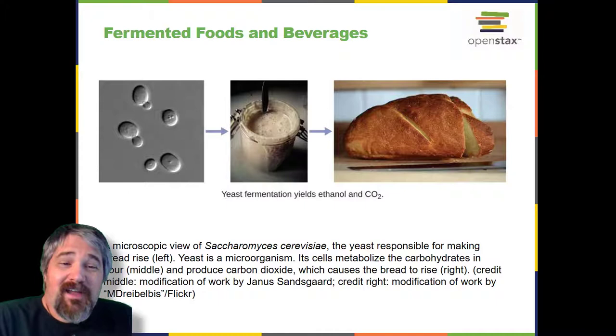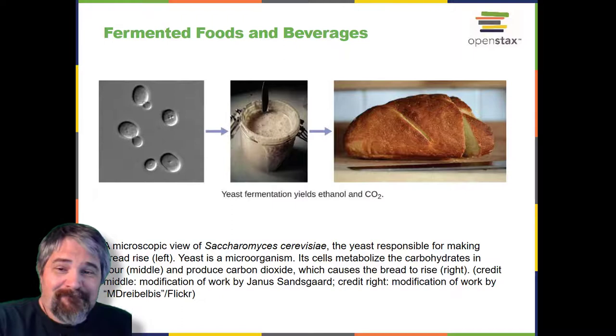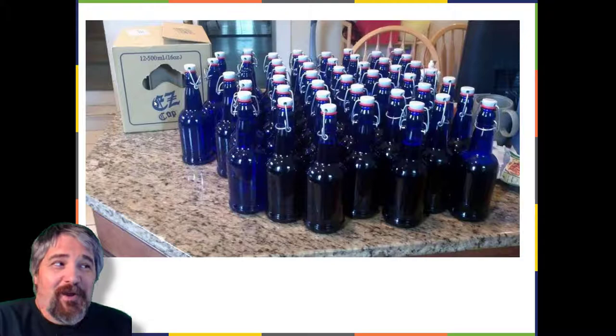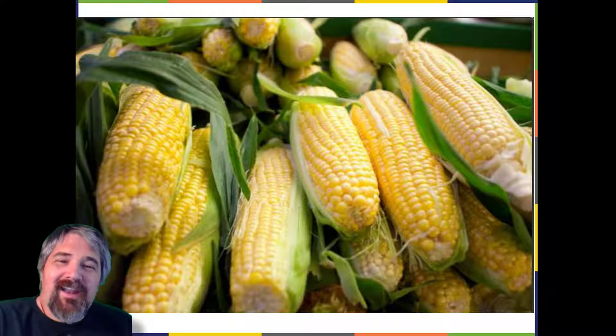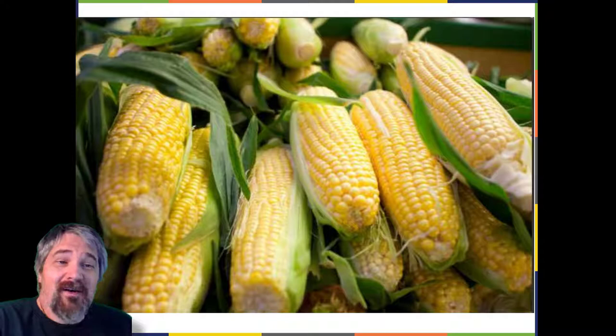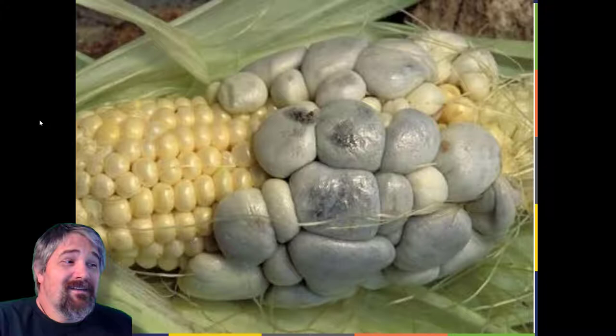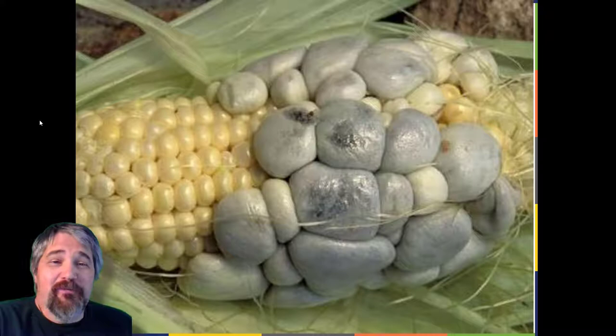Here in this figure we're looking at yeast — this is my own image from the last batch of beer that I brewed at home; it was a very good beer. Here is corn — Zea mays. There is an agricultural product derived from corn that is intentionally infected with corn smut. In the United States this is considered a pathogen, but in Mexico and South America it is considered a treat. Here is the corn bearing tumors full of growing Ustilago maydis, or corn smut. This is called huitlacoche.